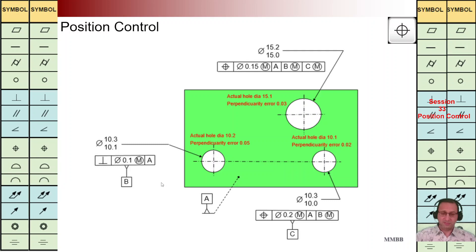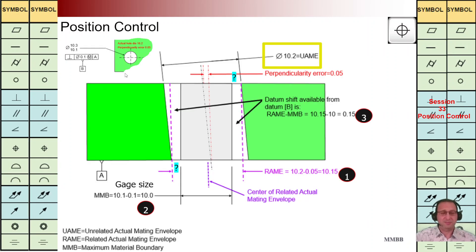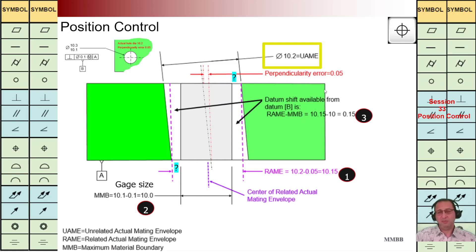Let's start with this hole on the left-hand side. We have this model. We know what is the actual size of this hole and we know what is the perpendicularity error. In the first step, we can calculate what is the distance between these two vertical lines — we have a minus between these two values. In the second step, we can calculate what is the maximum diameter of the gauge.